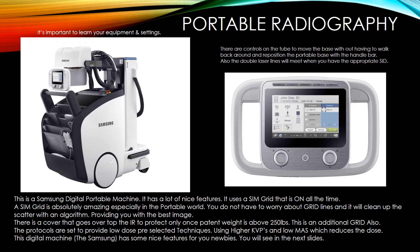It is important to learn your equipment and your settings. This is a Samsung digital portable machine with many nice features. It uses a SIM grid that is on all the time — a SIM grid is absolutely amazing, especially in the portable world. You do not have to worry about grid lines; it will clean up scatter within an algorithm, providing the best image. You don't have to worry if you are slightly off angle. There is a cover that goes over the IR to protect when the patient weight is above 250 pounds, which is also an additional grid to help clean up scatter. Protocols are set as low-dose pre-selected techniques using higher kVps and low mAs to reduce dose.